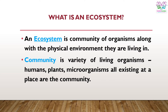Now it will be easy for you to understand what an ecosystem is. An ecosystem is a community of organisms along with the physical environment they are living in, as we saw in the previous picture. Now, what is community? Community is a variety of living organisms — like humans, plants, microorganisms — all existing at a particular place.